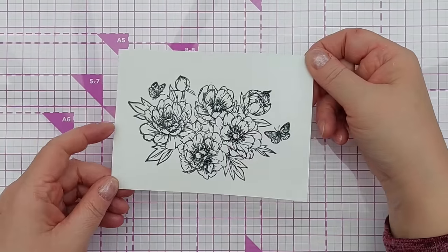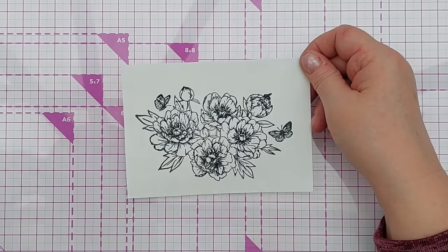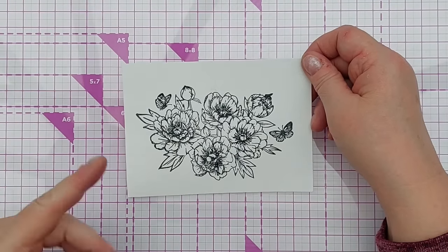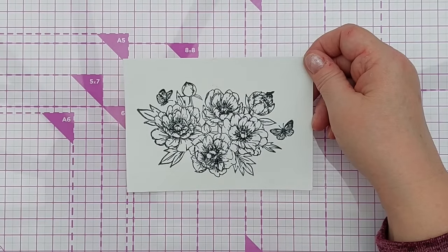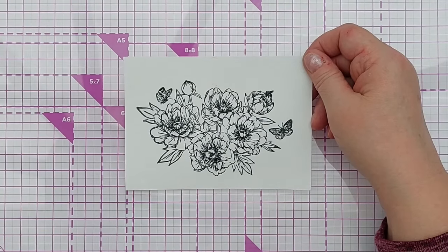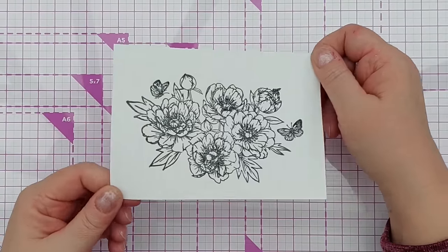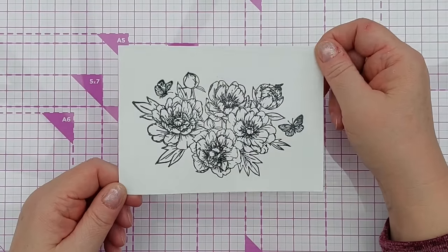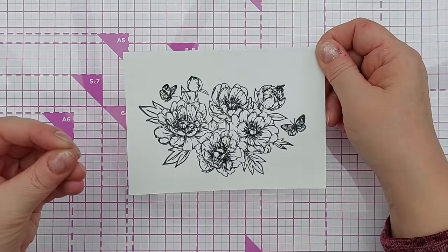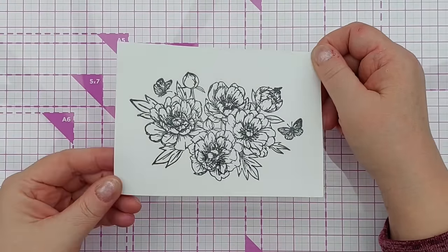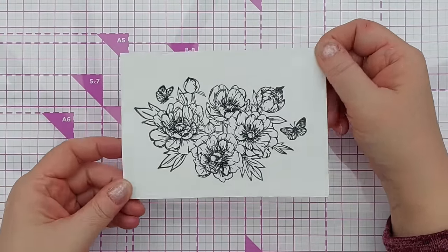So there we go. You don't have to heat emboss over the black image if you're using a waterproof black ink, but even if I'm using a waterproof black ink, I do like to clear emboss over the top because I think it really helps that image pack a punch and you get a nice slightly dimensional shiny black stamped image.